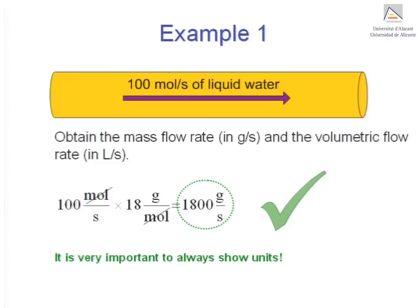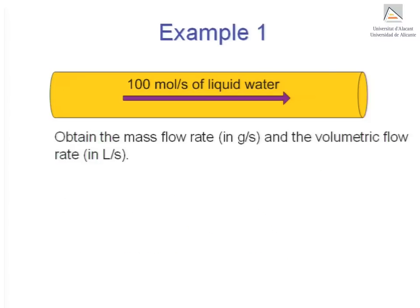Now we are required to convert molar flow rate to volumetric flow rate. Before proceeding, we will need to know what phase the water in the pipe is in. In this case, it is in the liquid phase. Thus, we will have to use the density of the liquid to carry out the conversion.